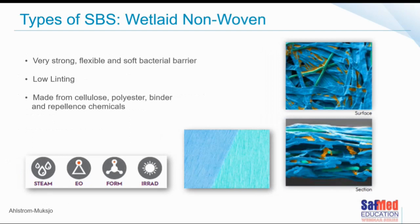Wet-laid non-woven is a really strong, very flexible, soft material — a soft bacterial barrier. It is low linting and made from a combination of cellulose paper, polyester materials, binders, and repellent chemicals, meaning some of these products will repel moisture or low-surface-tension liquids. Wet-laid non-wovens can be used with steam sterilization, ethylene oxide, formaldehyde, and radiation techniques.